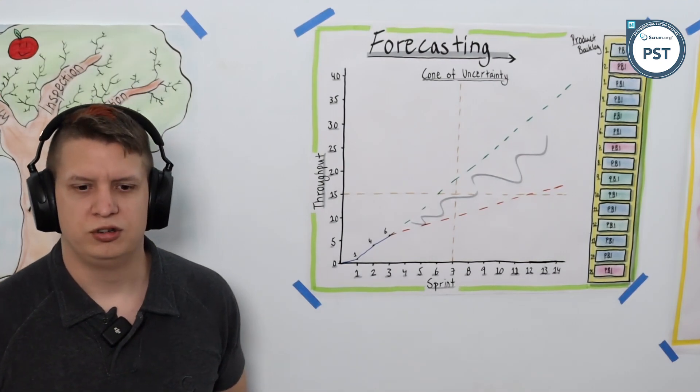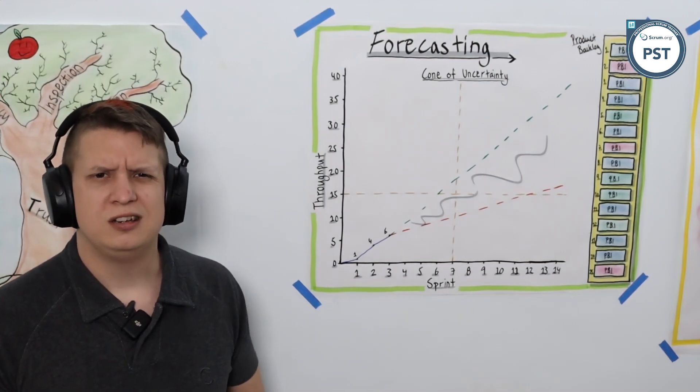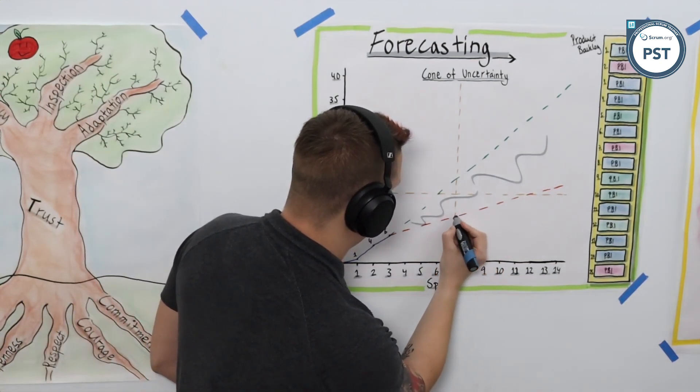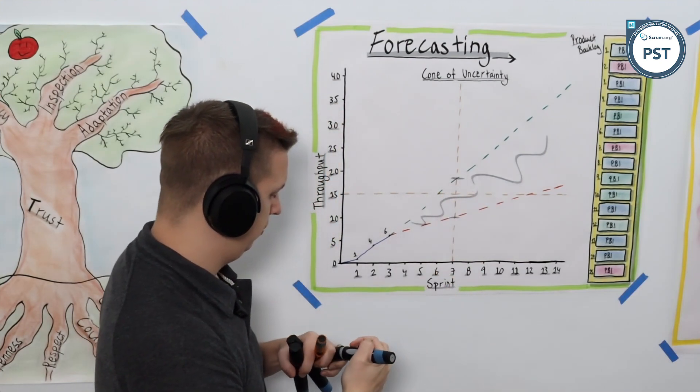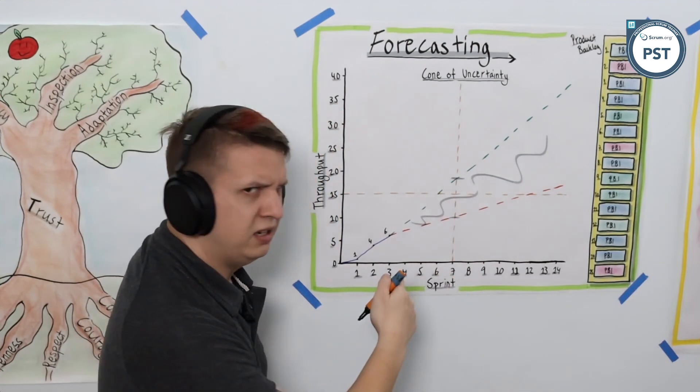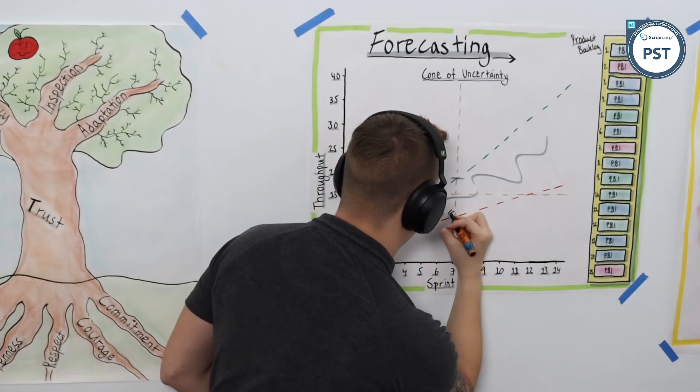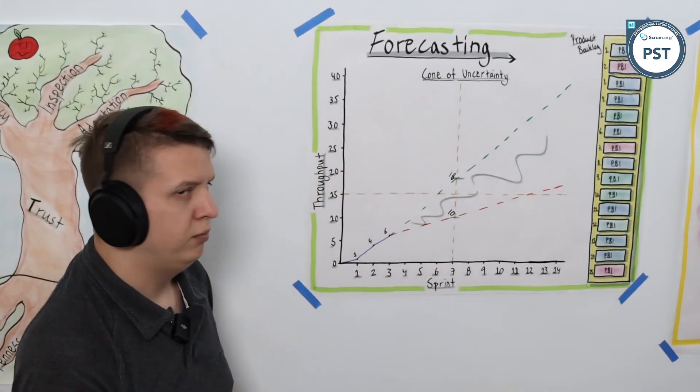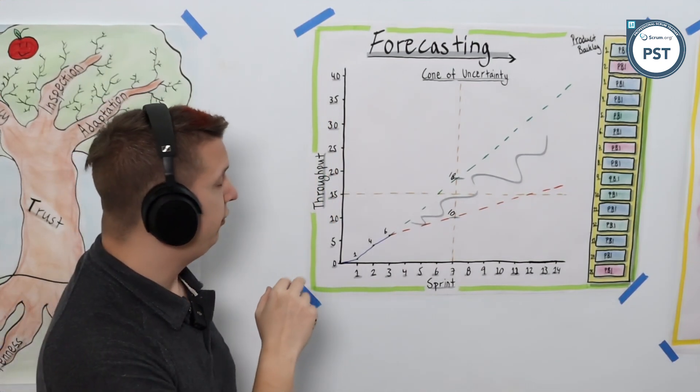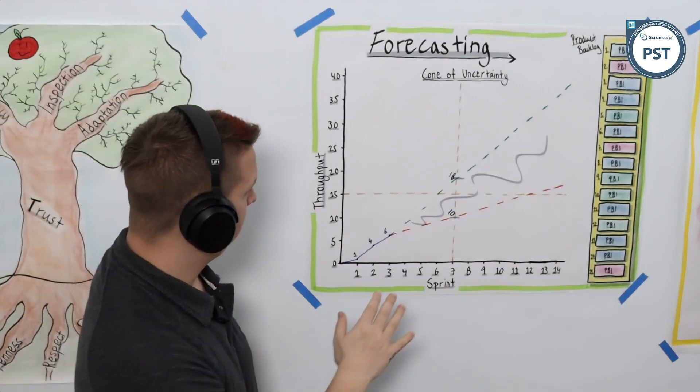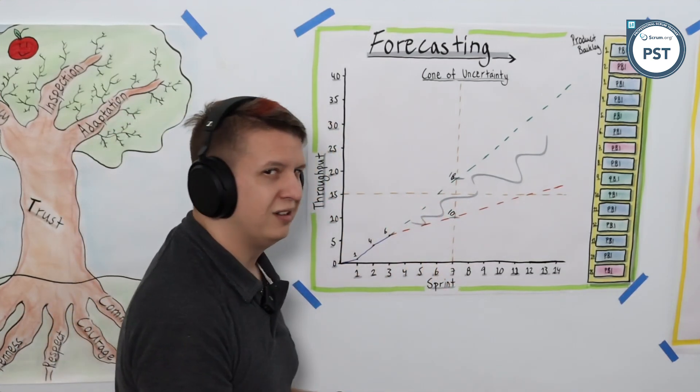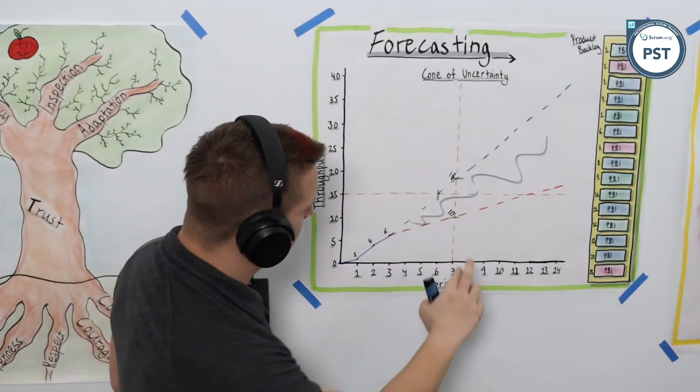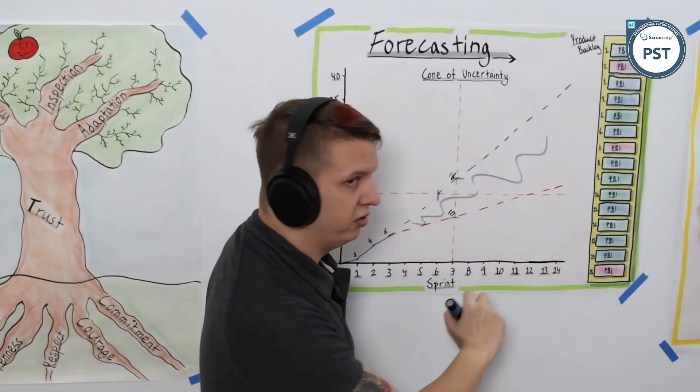If we start with answering that question of how much do we think is going to get done by sprint 7, well, over at sprint 7 somewhere between these two data points, that's probably around 10 items or 18 items. And if we look at when will we get 15 items done by, well, looking again, 15 best case scenario probably around sprint 6 if we're very lucky, and if we're very unlucky probably somewhere around sprint 12.